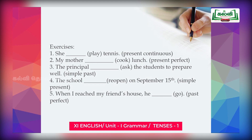Second exercise: 'My mother dash cook lunch' — use present perfect. The verb pattern is 'has/have' plus verb past participle. Past participle of 'cook' is 'cooked.' The subject is 'my mother,' singular, so we use 'has.' Answer: my mother has cooked lunch. Third: 'The principal dash ask the students to prepare well' — simple past. Pattern: did plus verb. 'Did' plus 'ask' changes into 'asked.' Answer: the principal asked the students to prepare well.